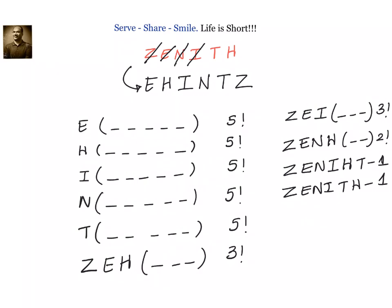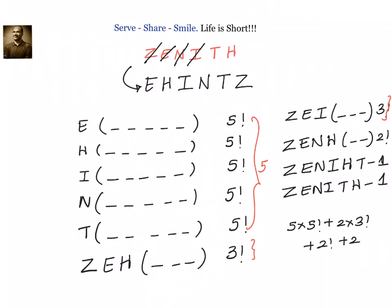Now let us add all of them. We have five factorial 5s, two factorial 3s, one factorial 2, and two 1s. So: 5 × 5! + 2 × 3! + 2! + 2. That is 5 × 120 = 600, plus 2 × 6 = 12, plus 2, plus 2 equals 616. So the rank of ZENITH is 616. Now let us see how we can find the rank using the shortcut method.